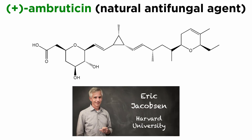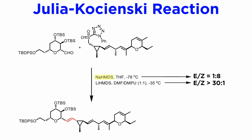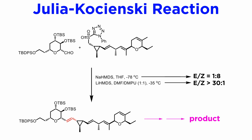As an example, we will showcase the synthesis of ambruticin, a natural antifungal agent described by Professor Eric Jacobson at Harvard University. One of the key steps of the synthesis is a modified Julia olefination. It is interesting to observe how, by changing the base from sodium hexamethyldisilazide to its lithium counterpart, presumably promoting anion aggregation, and optimizing the solvent from tetrahydrofuran to a mixture of dimethylformamide and dimethylpropylene urea, one can alter the selectivity from a very disappointing Z selectivity to a complete selectivity in favor of the desired E olefin. A firm rationale for the results is not available, and this highlights the empirical nature of much of organic synthesis. Two simple steps after the Julia reaction complete the synthesis of the natural product.